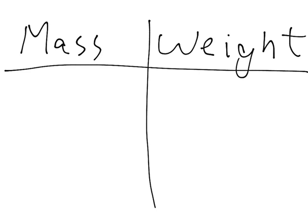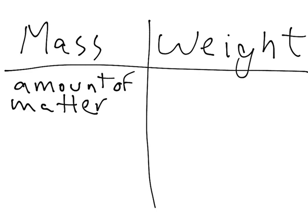First of all, mass measures quantity, or the amount of matter something has. And you can calculate the mass of an object by using a balance that will give it to you in kilograms or grams, depending on which kind of balance you're using.